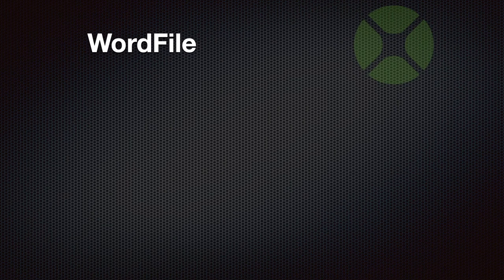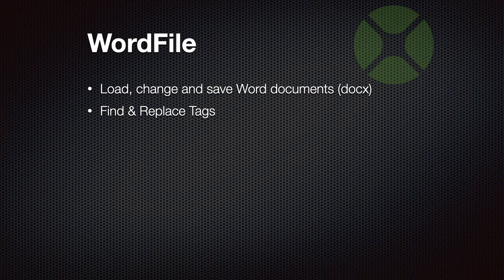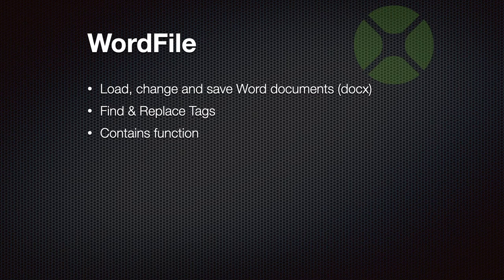We have a class to work with Word files. It allows you to load a Word file, make changes, and save it as a new Word document. This lets you find and replace tags in a template — you load a template, change fields like first name and last name, customize the document, and send it to the customer. We also got a Contains function to check if any text exists in a Word document, and a Substitute function to change any text, which is even more flexible than our earlier text functions.